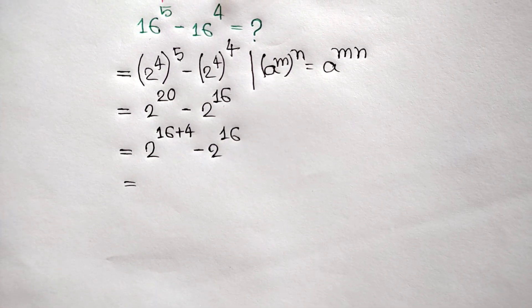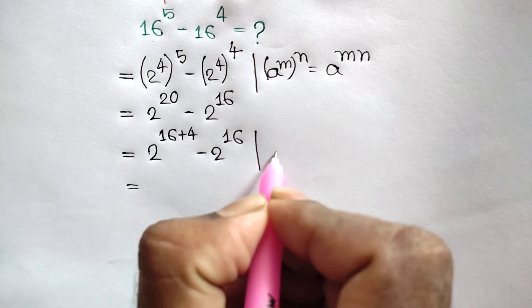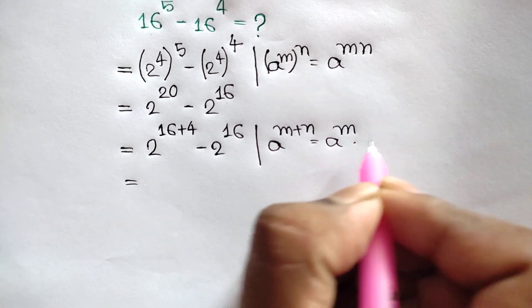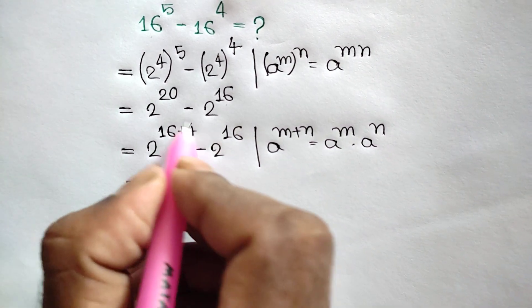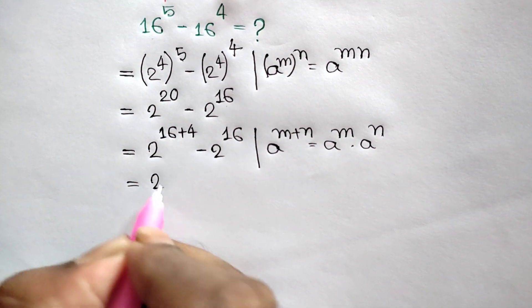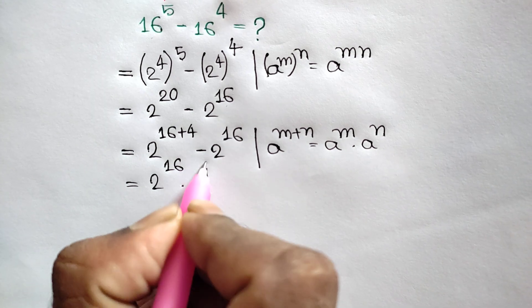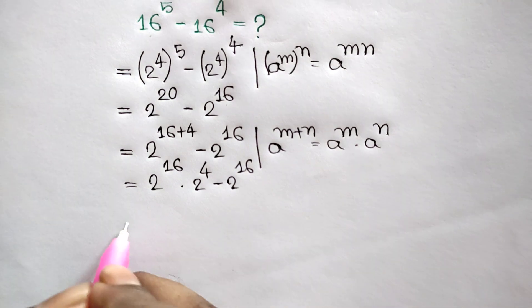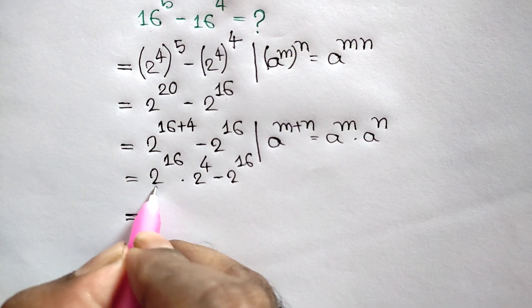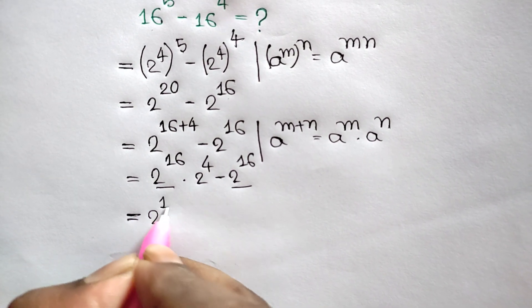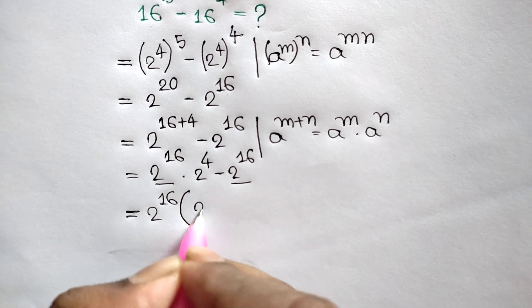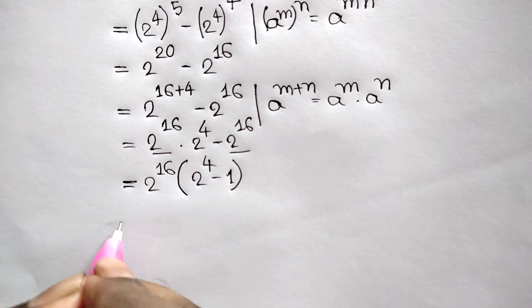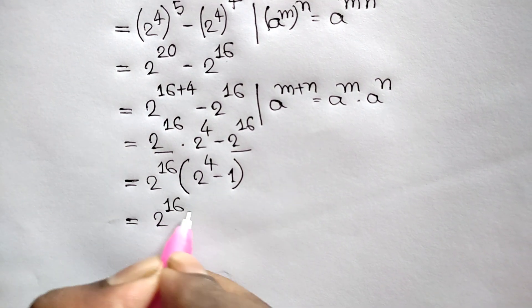Again we know that a to the power m plus n is equal to a to the power m times a to the power n. So according to this formula, here we can write 2 to the power 16 times 2 to the power 4, minus 2 to the power 16. Taking out the common factor 2 to the power 16, we get 2 to the power 16 times 2 to the power 4 minus 1.